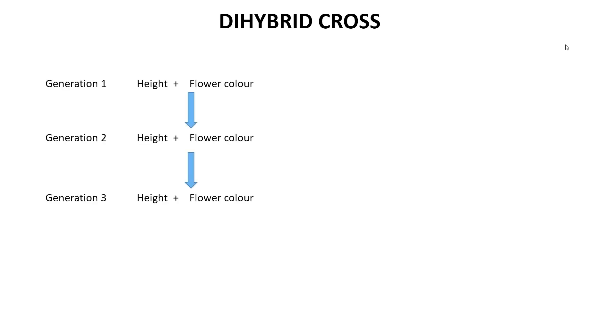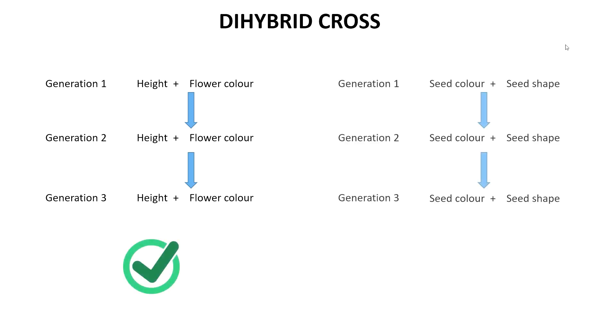Today we are going to learn about dihybrid cross. When we talk about dihybrid cross, we are interested in seeing how two characteristics are inherited together across the generations — for example, how height and flower color, or how seed color and seed shape, are inherited together across the generations.